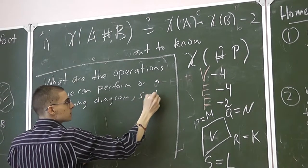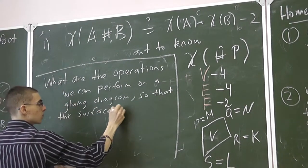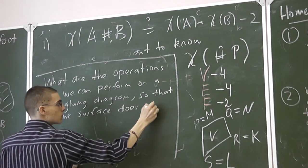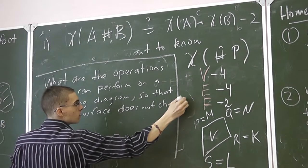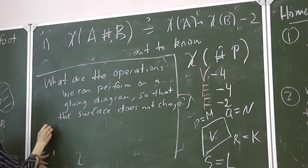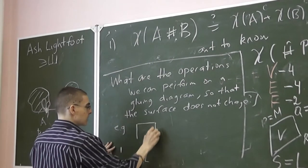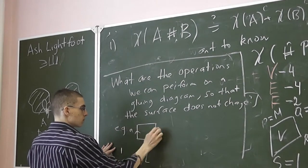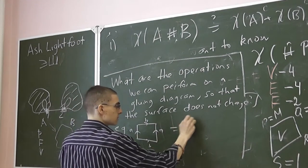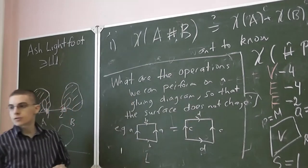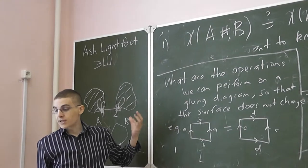So that the surface doesn't change. So if we have a gluing diagram, how can we change it so that we know without changing the surface?